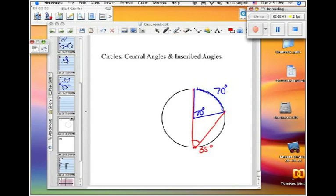Now, the interesting thing is that it doesn't really matter where I put my angle as long as it results in the same arc. So, this would also be a 35 degree angle. And this would also be a 35 degree angle. The inscribed angle is always half the measure of the arc.